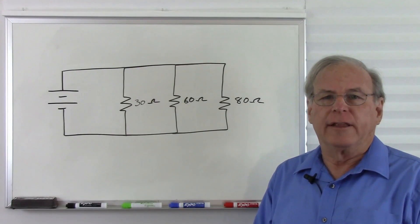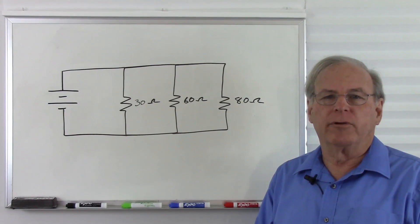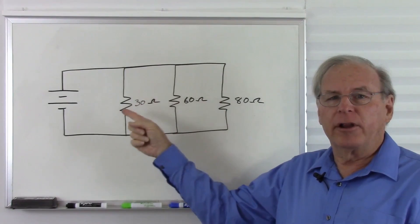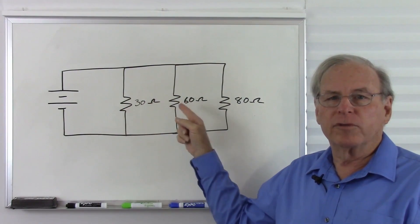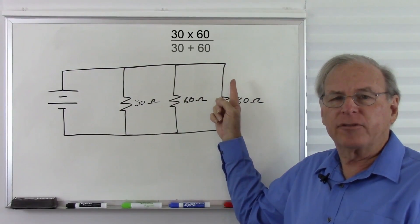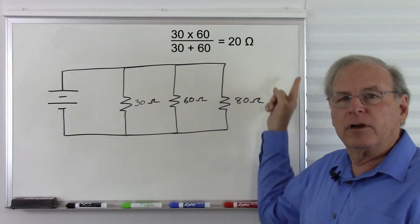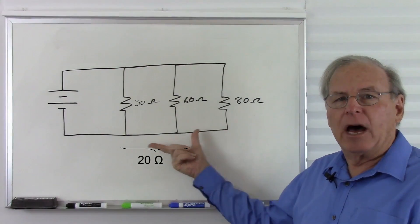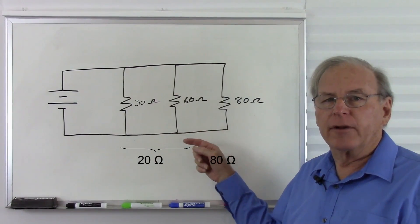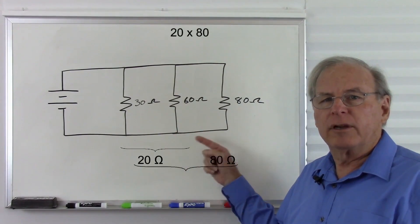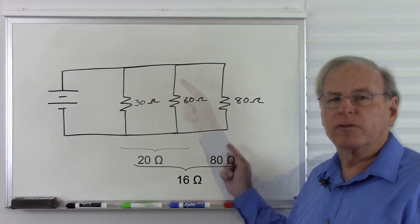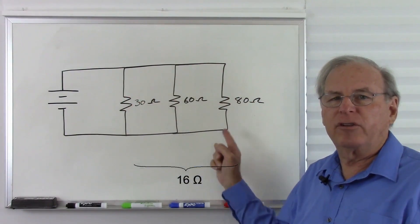The product over sum method of calculating the total resistance of a parallel circuit only works when you have two resistors. If you have three or more resistors, you have to work them in pairs. Let's start by working these two resistors — we have 30 ohms and 60 ohms. Together that is 30 times 60 divided by 30 plus 60, which equals a total of 20 ohms. Now we have 20 ohms here and 80 ohms here, so 20 times 80 divided by 20 plus 80, giving us a total of 16 ohms. This circuit has a total of 16 ohms resistance.